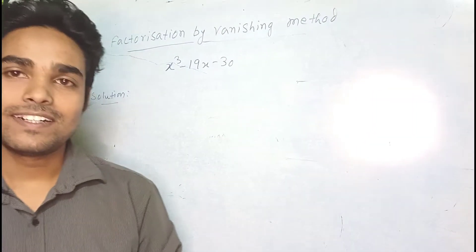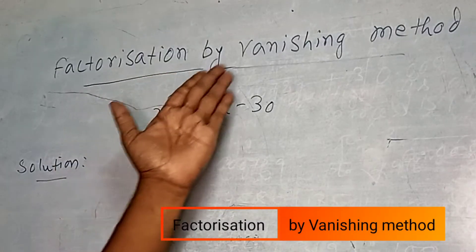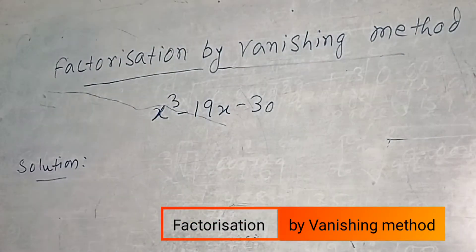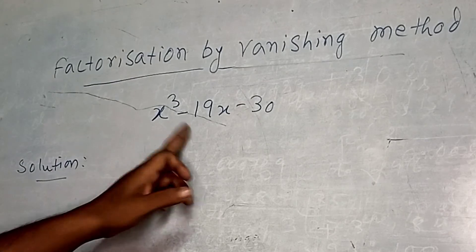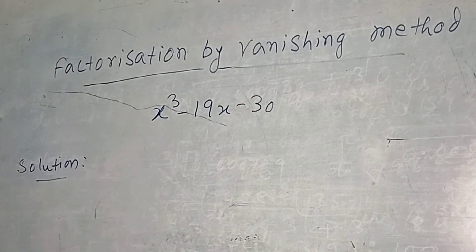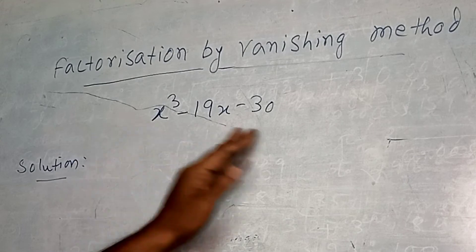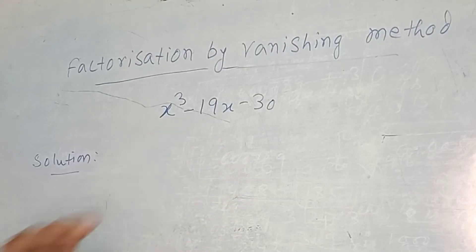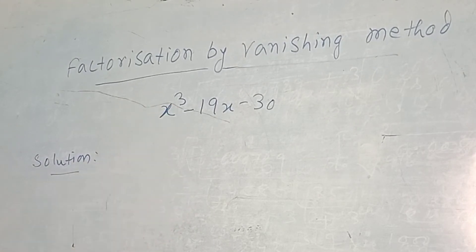Hi friends, we learned the vanishing method — factorization by vanishing method. So what is the vanishing method? Let us take one example: x cubed minus 19x minus 30. In this type of method, the given polynomial should be a cubic polynomial, meaning the maximum power of the variable must be 3.